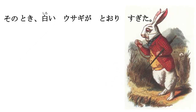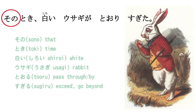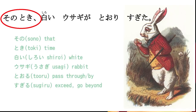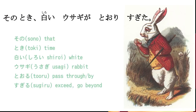Sono toki, shiroi usagi ga toori-sugita. Sono toki – sono means that, and toki means time. So we're literally saying that time, but this is more like saying just then, at that moment. We use it just the way we use other relative time expressions; we don't need to put ni or anything else with it. We just state the time and then continue with what was happening at that time.